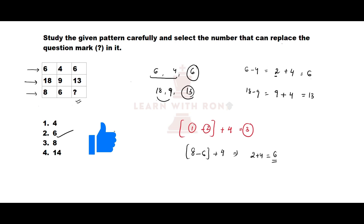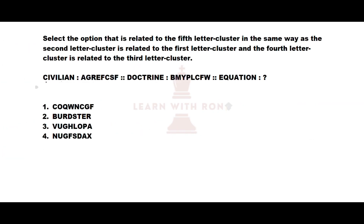Next question: 'civilian' is related to one letter cluster, 'doctrine' is related to another, and we need to find the cluster related to 'equation.' Writing numbers for 'civilian': C=3, I=9, V=22, I=9, L=12, I=9, A=1, N=14.